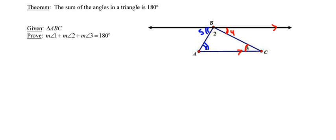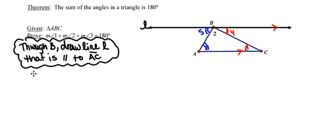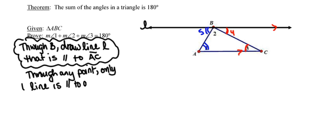Let's write this out in proof format. I started by drawing through point B a line parallel to line AC, and I'm going to call this line L so that I can reference it in my proof. The reason I can do this is because through any given point, there exists only one line that is parallel to a given line. In this particular case, the given line is line AC.